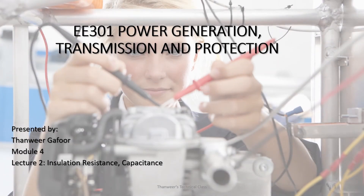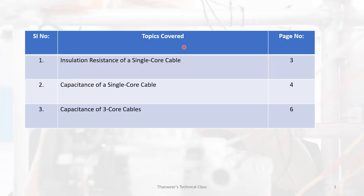Hi, welcome all. This is EE301, Module 4, second lecture series. This lecture covers the insulation resistance of a single core cable, capacitance of a single core cable, and capacitance of a three core cable.